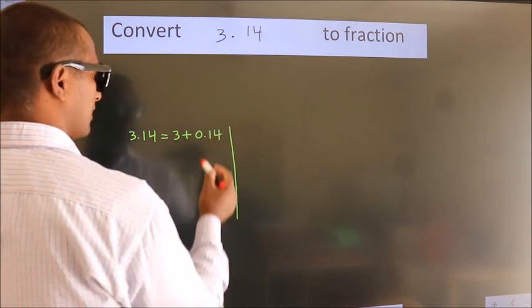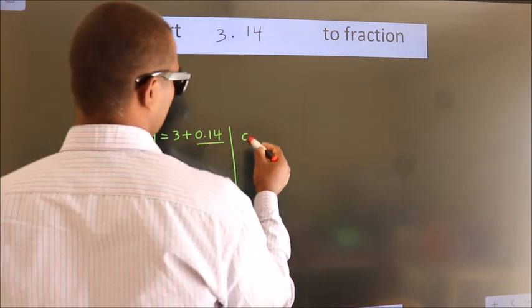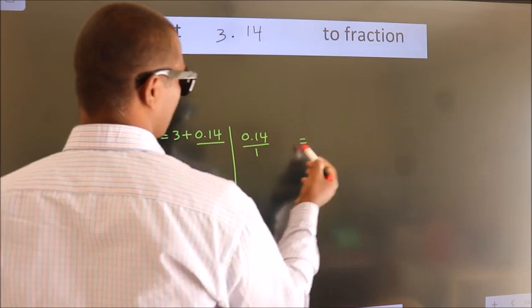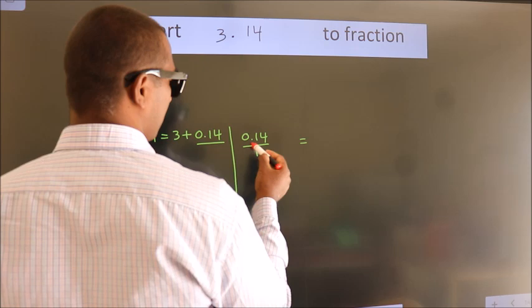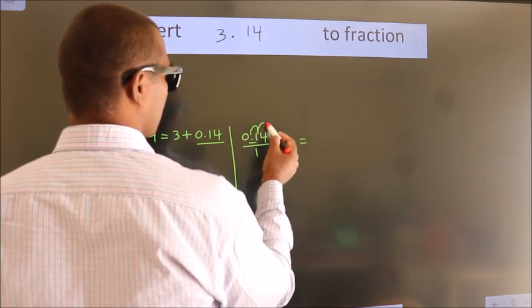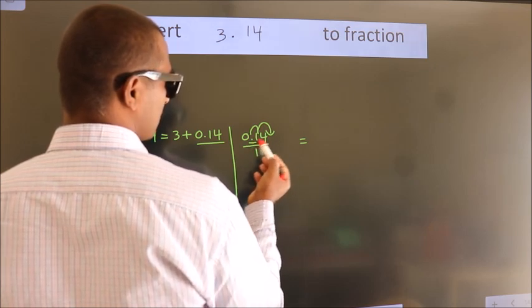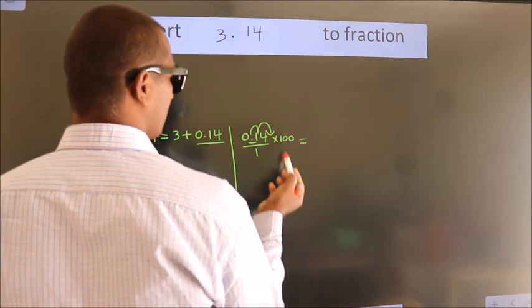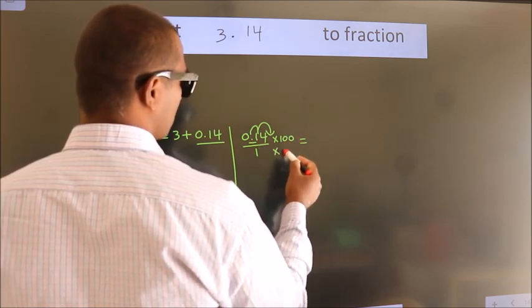Next convert this to fraction over here. So 0.14. To convert this to fraction, we have to move this decimal after two numbers. For that, multiply it with 100. Whatever you are multiplying in the numerator, in the denominator also do the same.